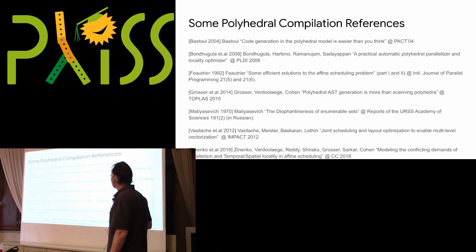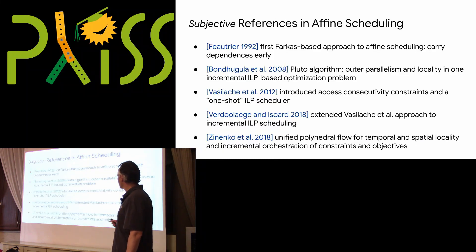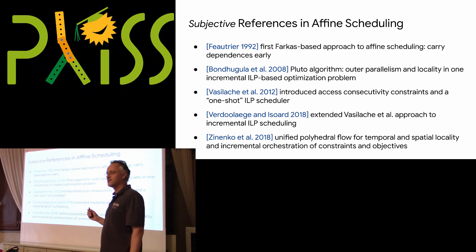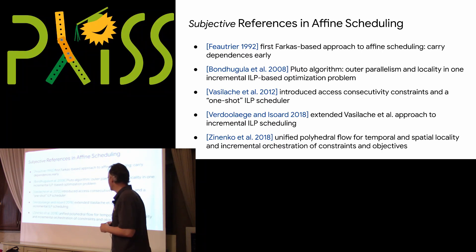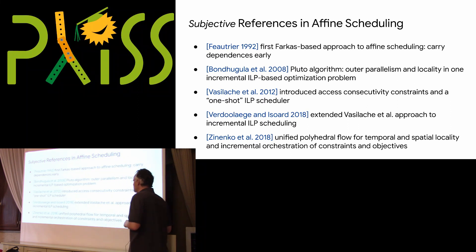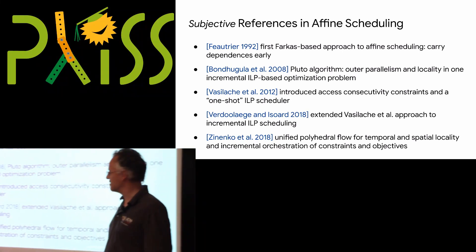Here are two sets of references: one for general results in Presburger Arithmetic applied to compilation, and one with more subjective references on what I believe is most important if you care about affine scheduling. Answering yesterday's question — there is no textbook on polyhedral compilers yet, but it's getting more important and feasible given the maturity of the techniques.